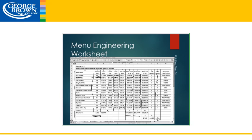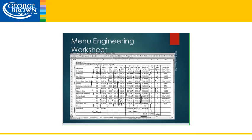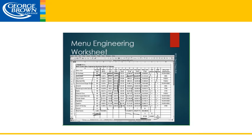Next we calculate our average contribution. We take the total menu contribution and divide it by the number of covers sold, and that gives us our average contribution. We can then determine whether each item is high or low in comparison to the average contribution by comparing the contribution margin. In this case the average contribution margin was $17.85. We look at each item's contribution margin, and if it is higher than the average we rank it as high, and if lower we rank it lower. Then we classify each menu item as either a dog, star, plow horse, or puzzle.